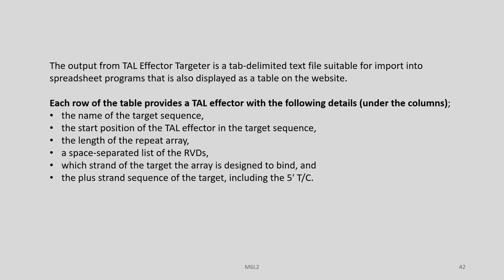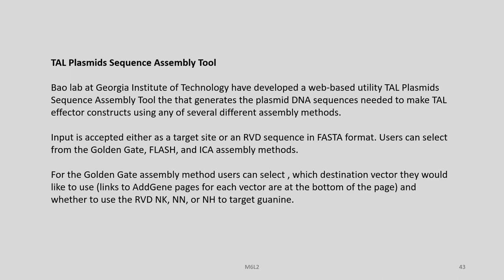The output from TAL Effector Targeter is a tab-delimited text file suitable for import into spreadsheet programs, also displayed as a table on the website. Each row of the table provides a TAL effector with the following details: the name of the target sequence, the start position of the TAL effector in the target sequence, the length of the repeat array, a space-separated list of the RVDs, which strand of the target the array is designed to bind, and the plus-strand sequence of the target including the 5-prime T.